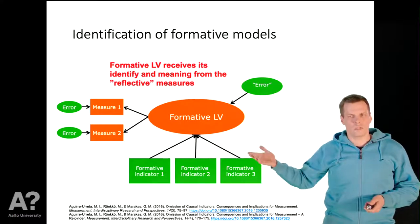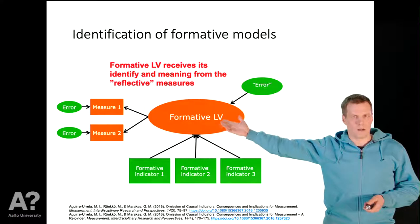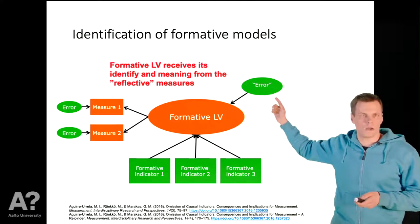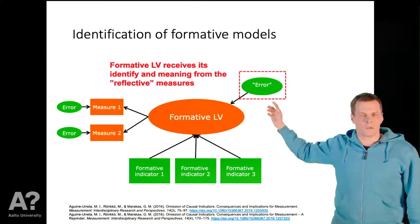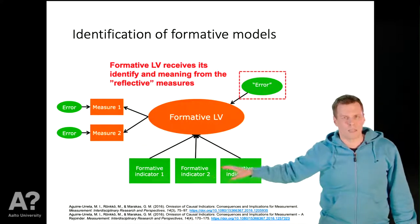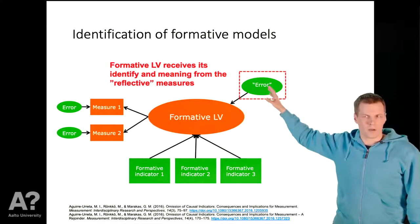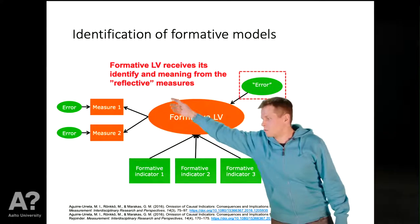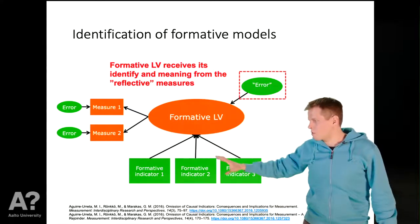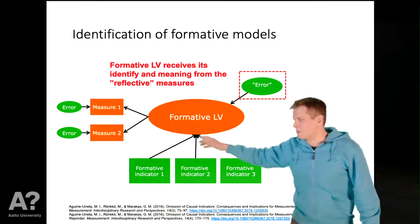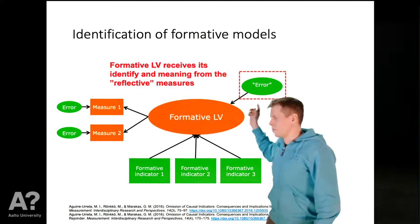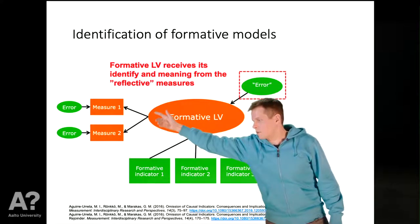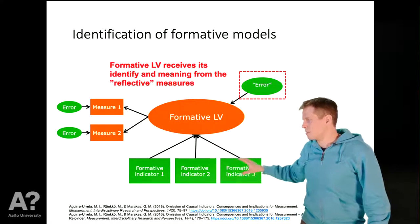The cause of this phenomenon — where the meaning of the latent variable comes from the two reflective measures instead of the three formative measures — is the error term. The error term guarantees that whatever these formative indicators represent, it makes the latent variable a common factor of the two reflective indicators. If the three formative indicators are conceptually unrelated to what the reflective indicators represent, the error term will compensate for that, and we are basically just modeling the error term with the three formative indicators.